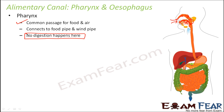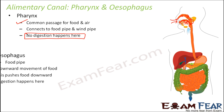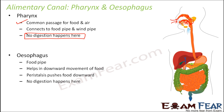Pharynx is connected to the nose as well as to the mouth — it is connected to both parts. After passing through the pharynx, where does the food go? It goes into the food pipe, which is the esophagus.